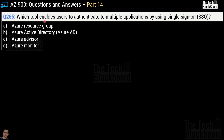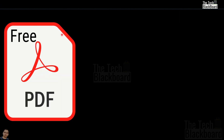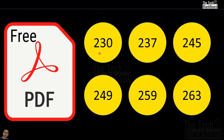Question number 265: which tool enables users to authenticate to multiple applications by using single sign-on (SSO)? Options are Azure Resource Group, Azure Active Directory, Azure Advisor, and Azure Monitor. The correct answer is option B, Azure Active Directory. To get the free PDF file of all questions with answers discussed in part 13 and part 14, you need to tell the correct answers for question numbers 230, 237, 245, 249, 259, and 263 in the comment section or email connectus at thetechblackboard.com.